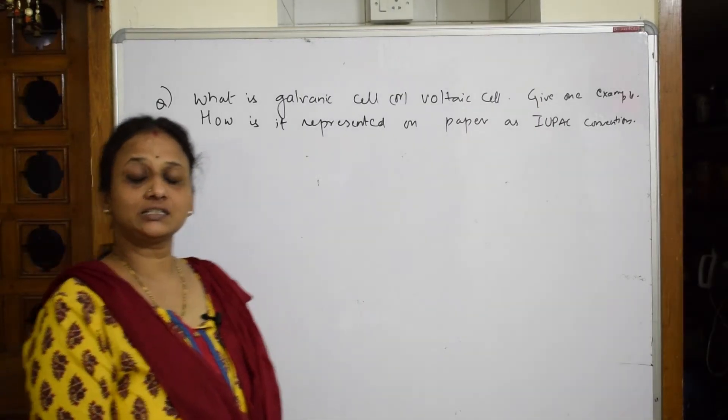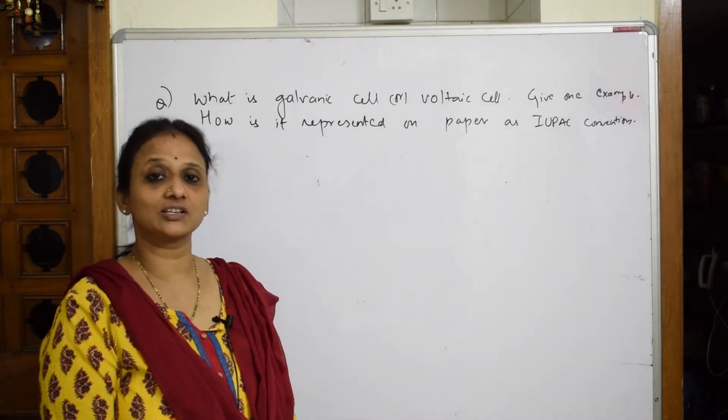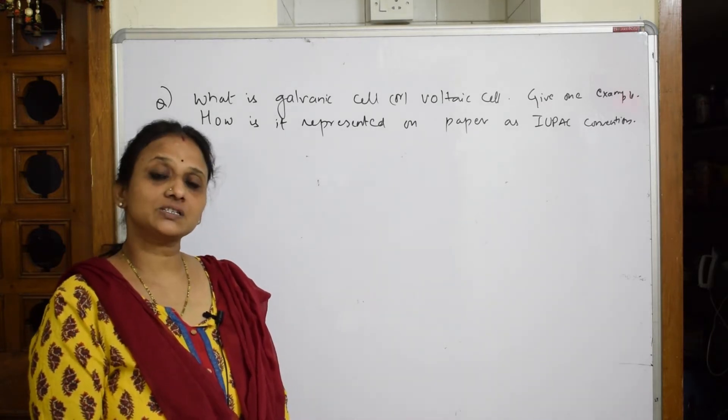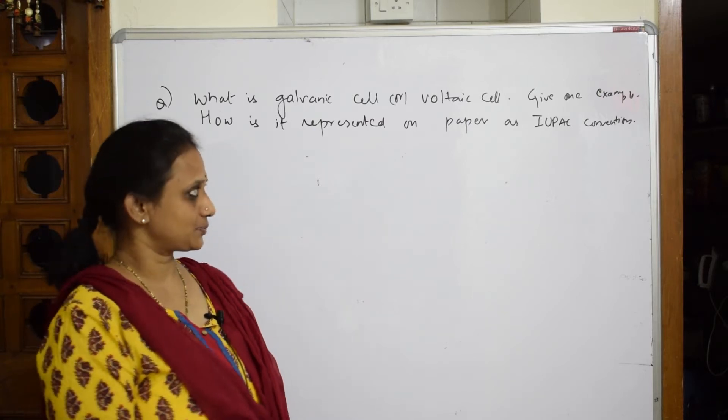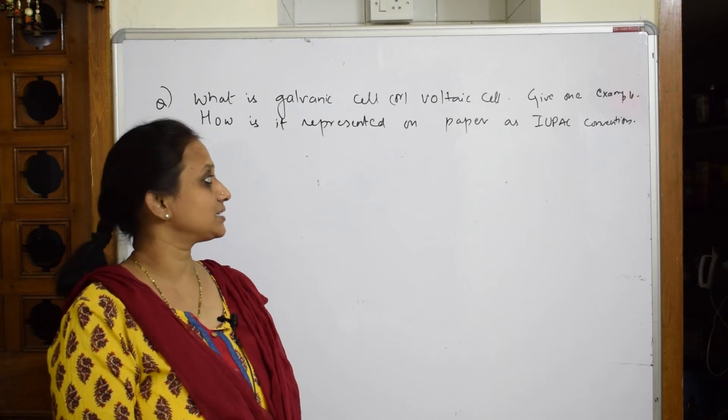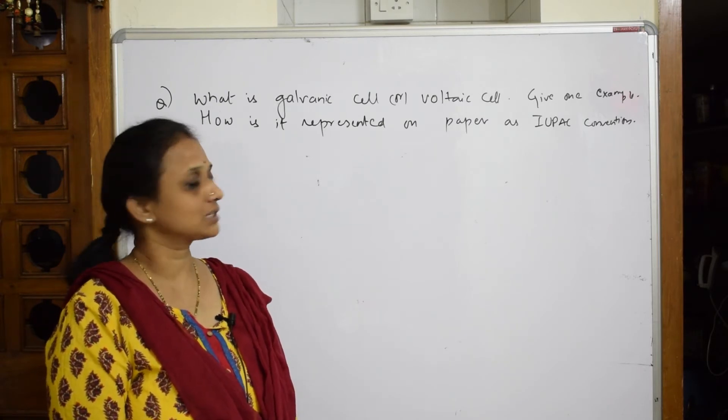Now let's come back. We have already learned the differences between electrochemical cells and electrolytic cells. Now your actual electrochemistry starts here. They're going to ask you what is galvanic cell or voltaic cell, give one example, and how is it represented on paper in the convention.